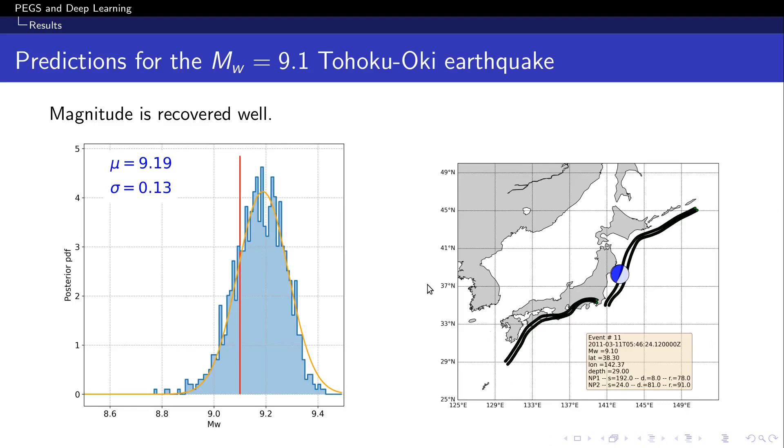Finally, we tested our model on real data, and these are the results for magnitude for Tohoku. On the left, you can see the probability distribution of the results, which is obtained by predicting magnitude a thousand times, while randomly muting some of the model parameters and combining all the results. This approximates the posterior probability distribution and gives an idea about the uncertainties on the predicted magnitude. As you can see, the model predicts the true magnitude of 9.1, indicated by the red line, pretty well, as the mean of the distribution is about 9.2, and the standard deviation is 0.13.